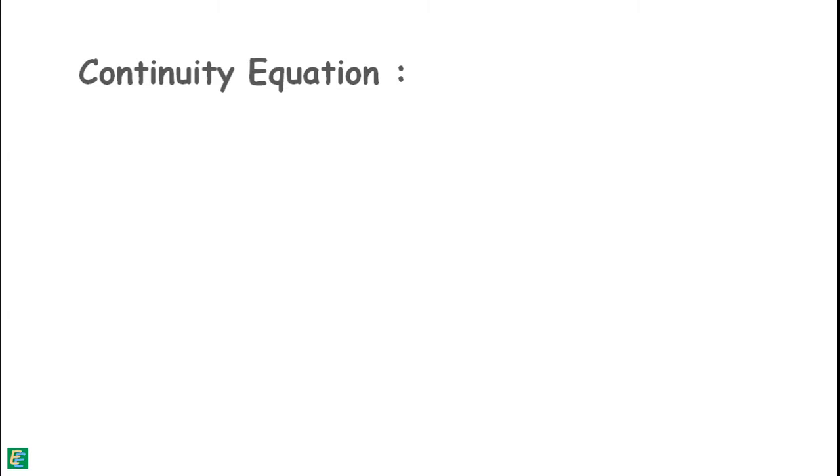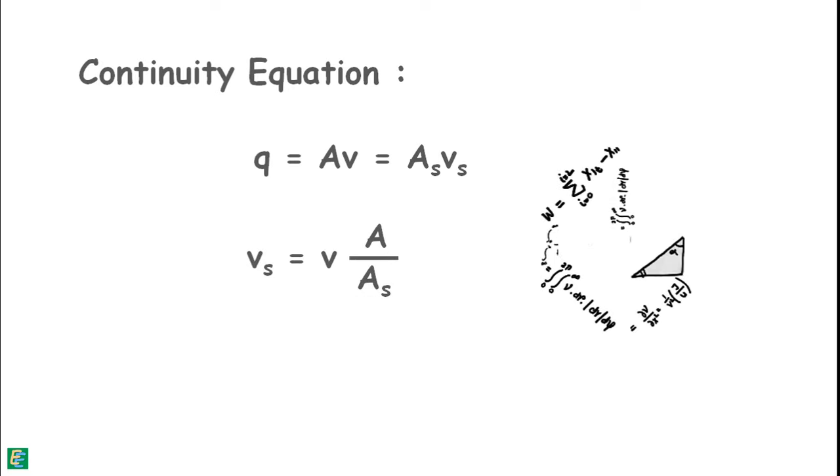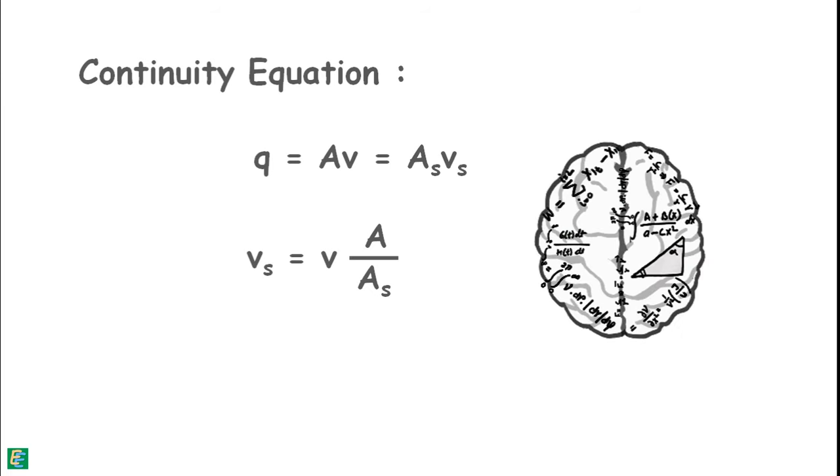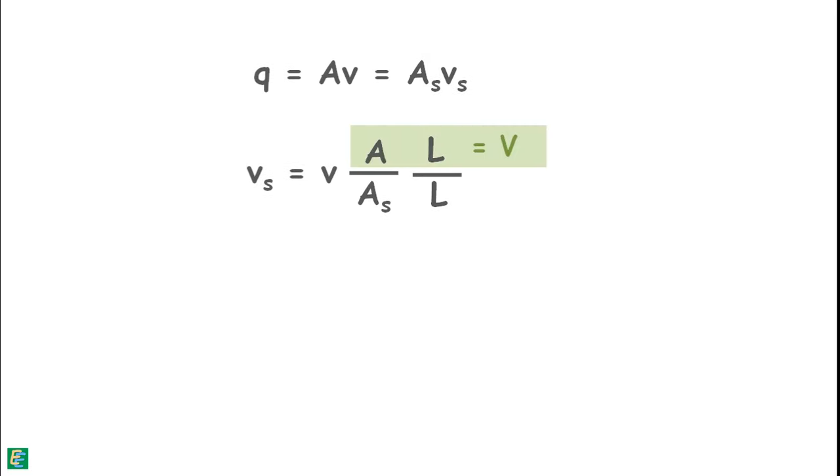Using the continuity equation, we can write discharge through whole cross-sectional area is actually equal to the discharge through its voids. We multiply both numerator and denominator by the length of specimen L. This is the total volume of soil sample and this is the total volume of voids. And if we write it as this, then we can see this ratio is the porosity of the soil. So we can write this equation as Vs = V / n.